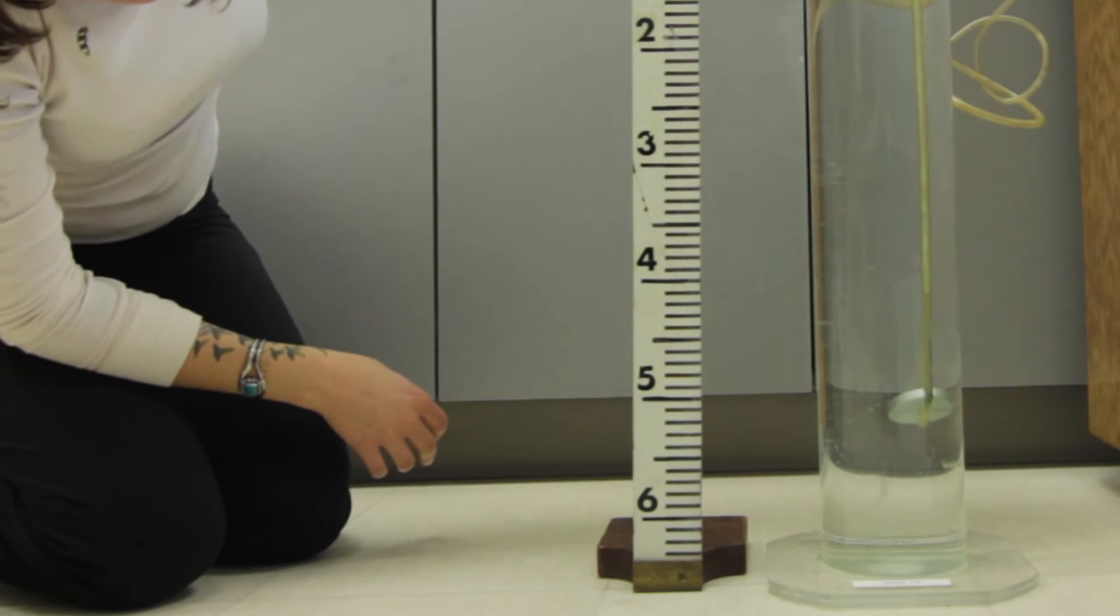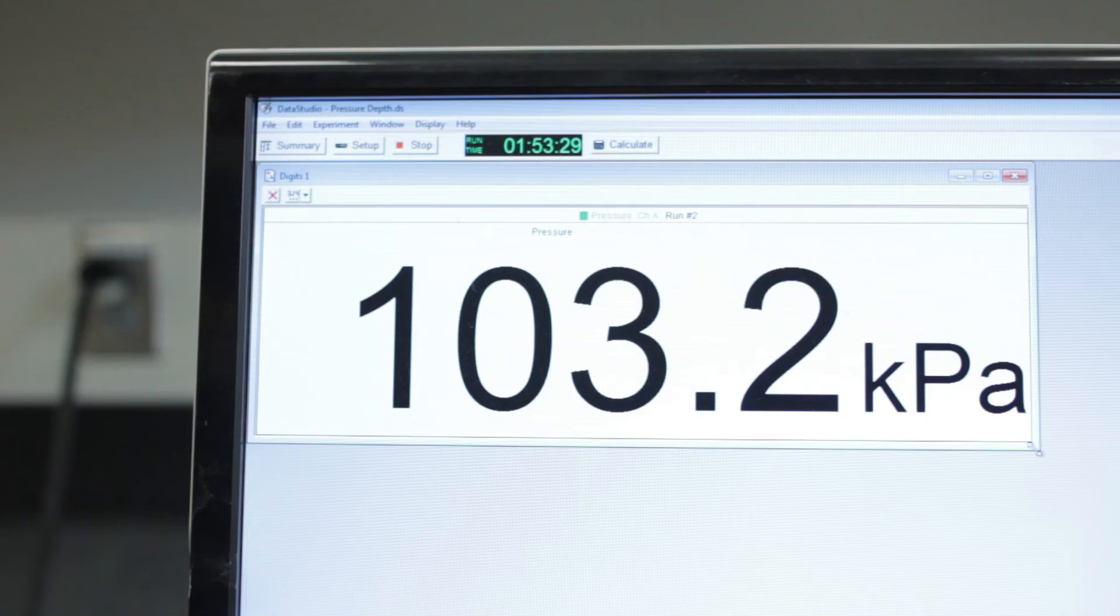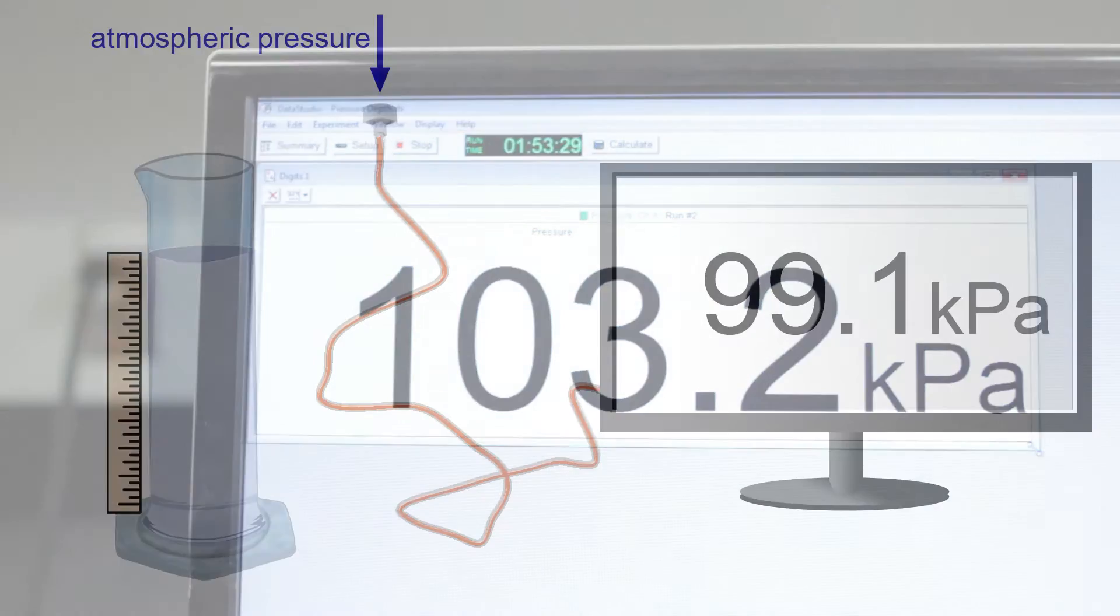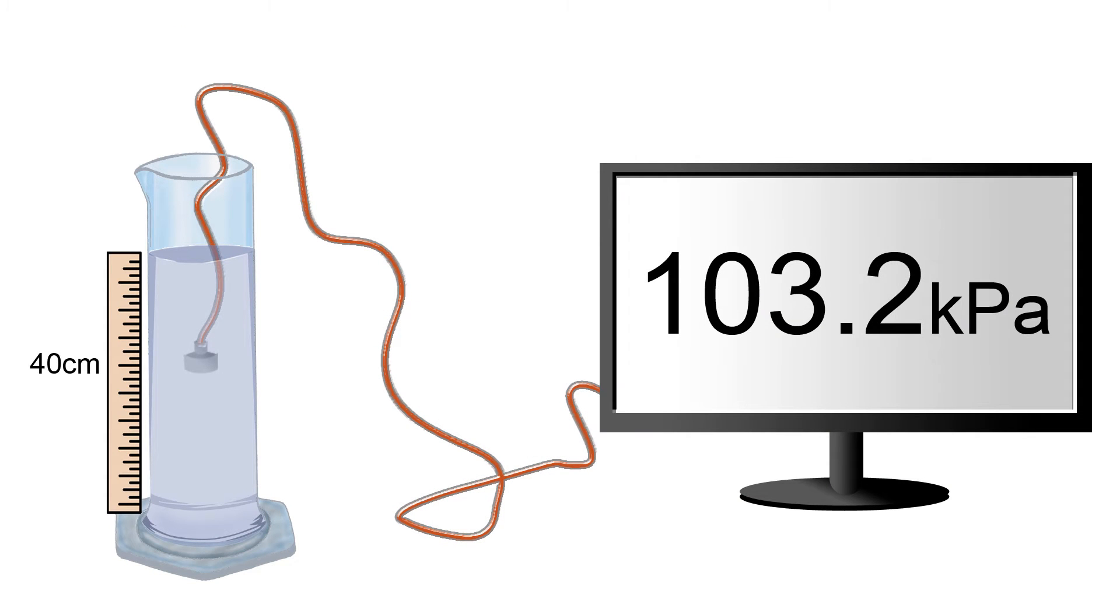If we lower the pressure sensor twice as deep to 40 centimeters, 0.4 meters, the pressure increases to 103.2 kilopascals, 4.1 kilopascals over atmospheric pressure.